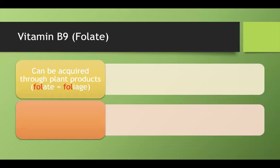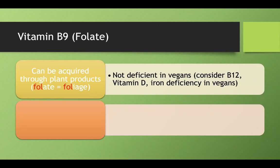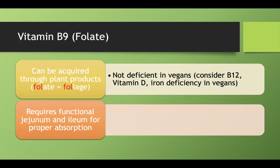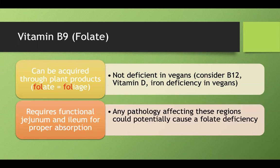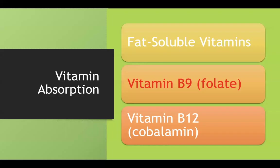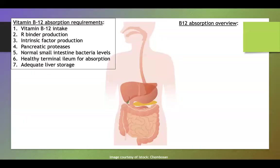Vitamin B9 or folate is usually acquired through plants — think 'folate is foliage.' Vegans don't typically get folate deficiency, but they should be watched for B12, vitamin D, and iron deficiencies. Folate requires functioning jejunum and ileum for absorption. Folate deficiency is somewhat rare; the condition it's most associated with on exams is tropical sprue.